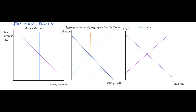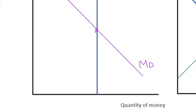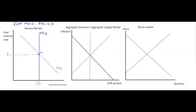We start off with the money market diagram. We have a money supply curve which is controlled by the central bank and independent of the real interest rate, and we also have a downward sloping line representing money demand. The equilibrium point is where they intersect, yielding the real interest rate r1 and the quantity of money q1. This is our starting point — point A. We're saying there is a policy of expansionary monetary policy, which is expanding the money supply.